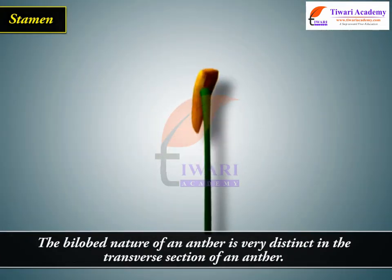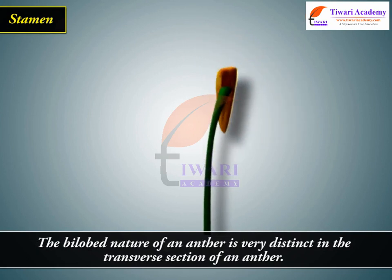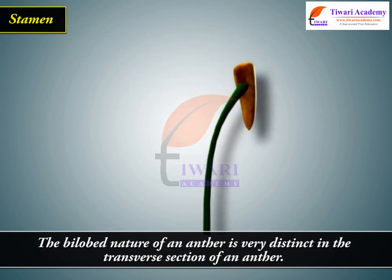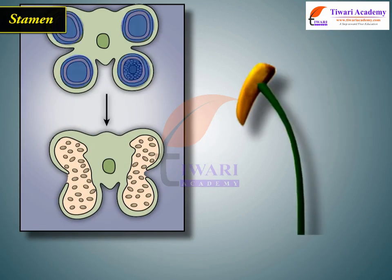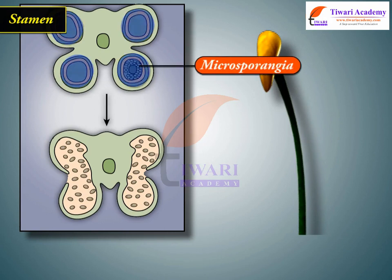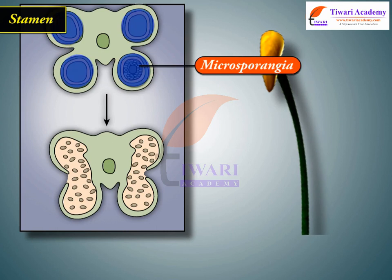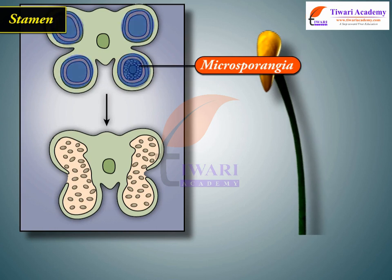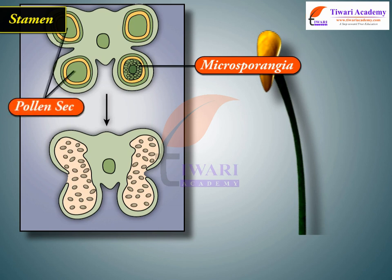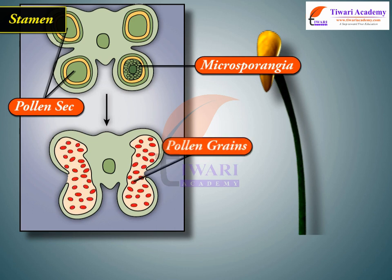The bilobed nature of an anther is very distinct in the transverse section. The anther is a four-sided or tetragonal structure consisting of four microsporangia located at the corners, two in each lobe. The microsporangia develop further and become pollen sacs, extending longitudinally through the length of the anther and packed with pollen grains.